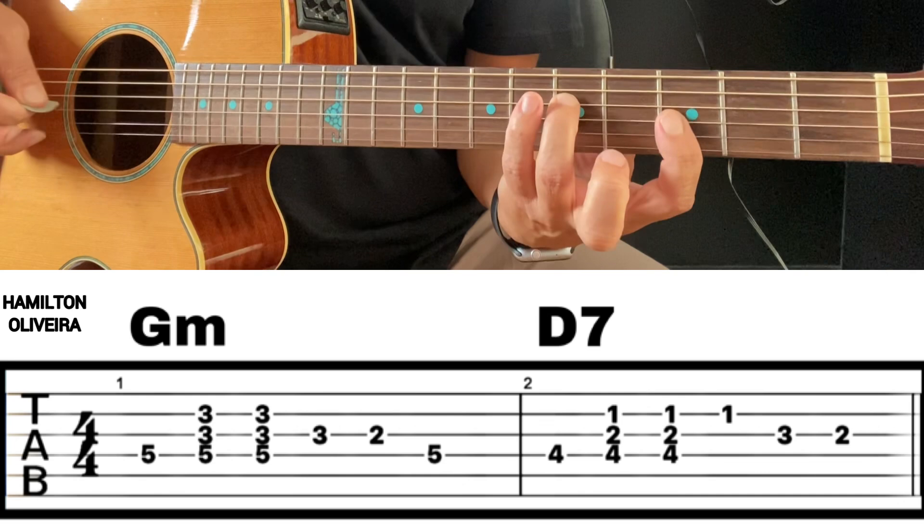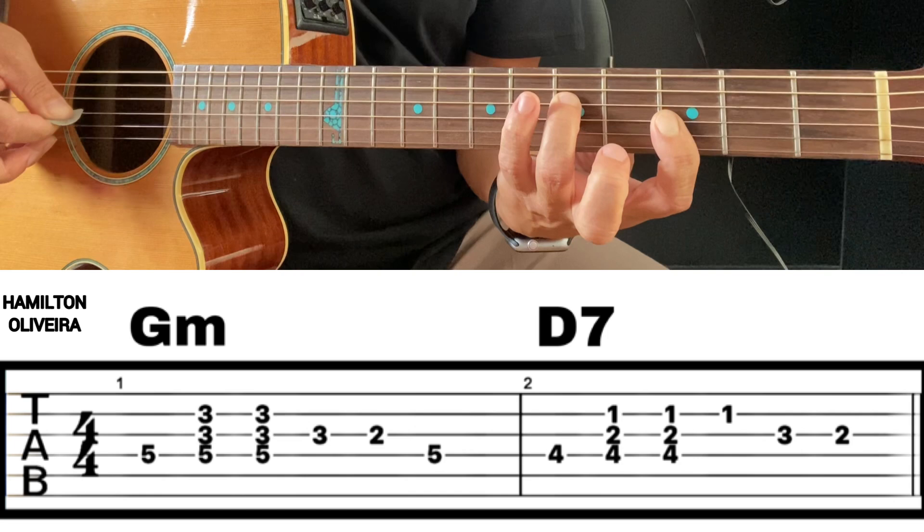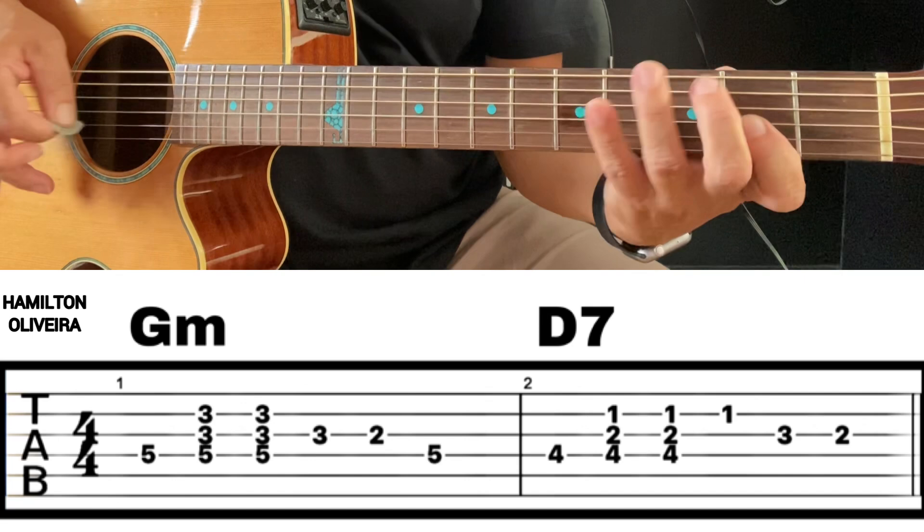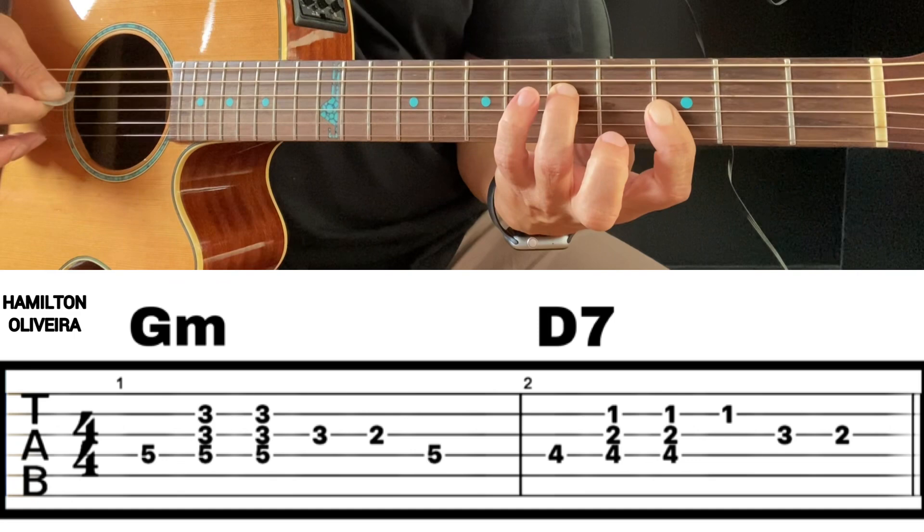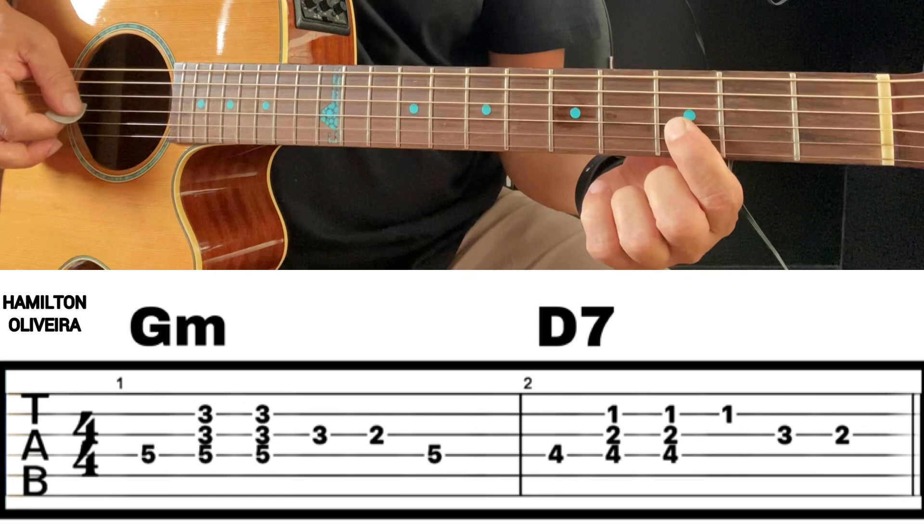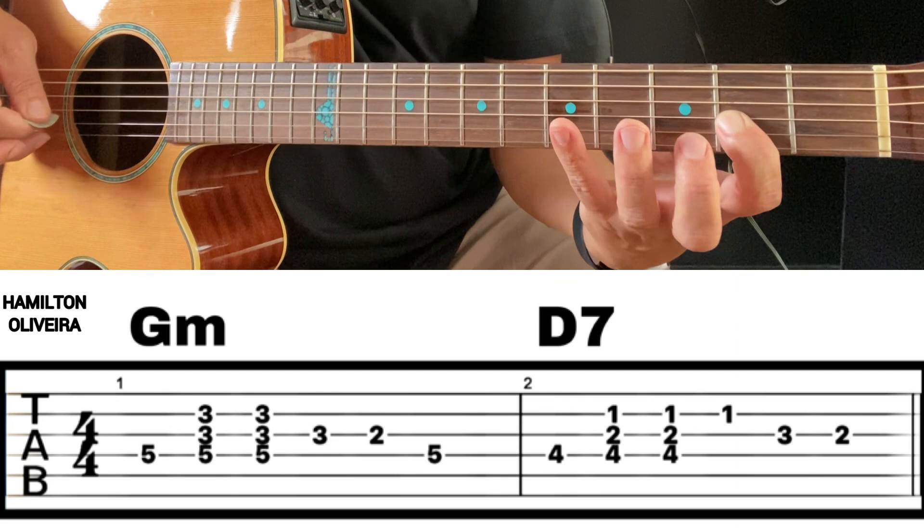Mais uma vez. Muito simples, né? Agora tem essa escalinha aqui para ir já para o acorde de Ré com sétima. Essa escalinha, depois que você fizer isso aqui, aí você vai fazer essa escalinha. Terceira corda na terceira casa, segunda casa terceira corda, quarta corda quinta casa, e vem para cá.